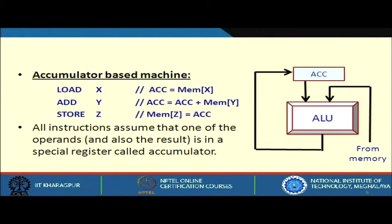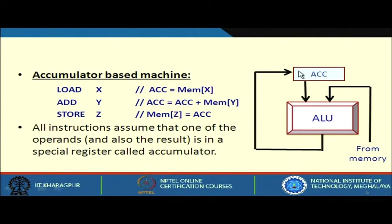In an accumulator-based system, to perform z = x + y, you load X — whatever value is at location x is loaded and stored in the accumulator. Then 'add Y' adds the content of location y with the accumulator and stores the result back in the accumulator. All instructions assume that one operand and also the result is in the special register called the accumulator.